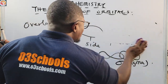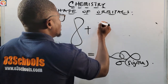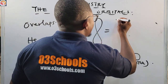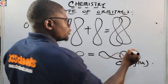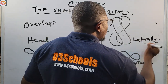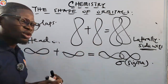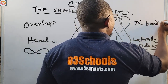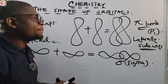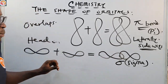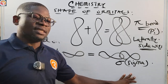But when two P orbitals overlap laterally — that is sideways — a pi bond is formed. Pi bond is formed when two P orbitals overlap laterally or sideways. If they overlap head-on, a sigma bond is formed. You must know this distinction.